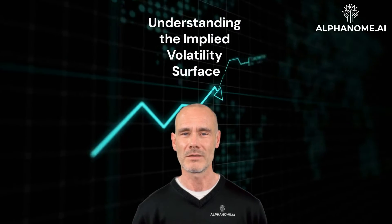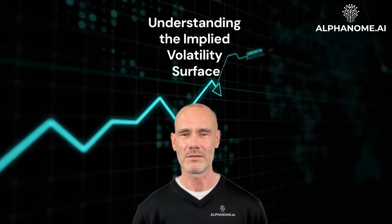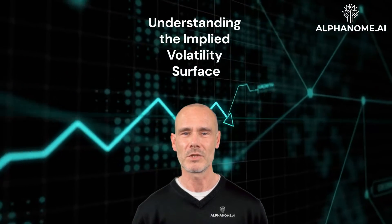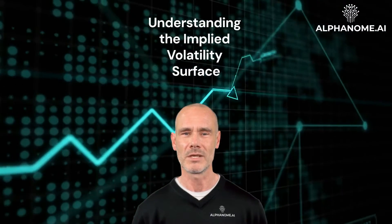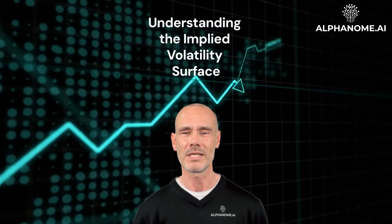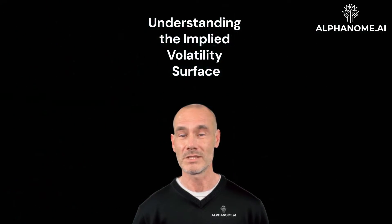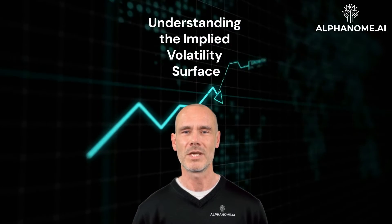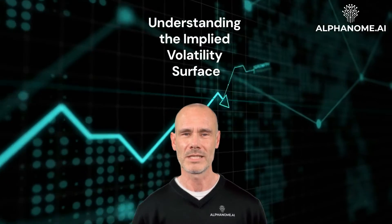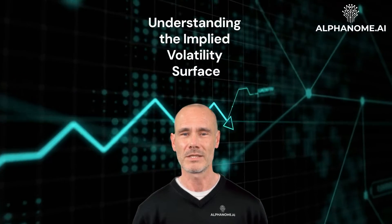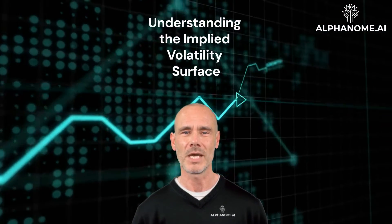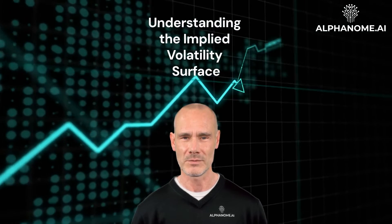The implied volatility surface is a crucial concept for investors who trade options or need to properly account for options positions. It provides a visualization of the implied volatility of options across different strike prices and expiration dates for a given underlying asset. Implied volatility represents the market's expectation of how volatile the price of the underlying asset will be until the option expires.